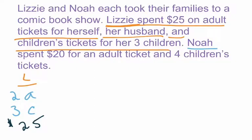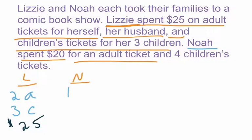Let's look at Noah's. Noah is a little different — he didn't buy as many. He only got one adult ticket. So Noah spent $20 on one adult ticket and four children's tickets. He had four children's tickets and spent $20.